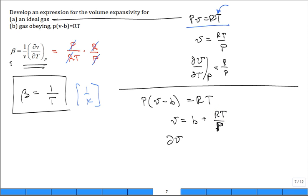And then now we get the partial of V with respect to T holding pressure constant. And B is a constant, so that doesn't come into play. We're left with R over P.